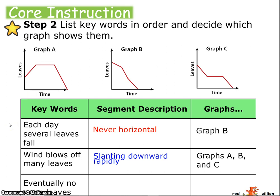Eventually there are no more leaves. So at some point, this graph is going to reach 0 on the y-axis because there will be no more leaves. And all three graphs do that at this point, here in graph B and then here in graph C.